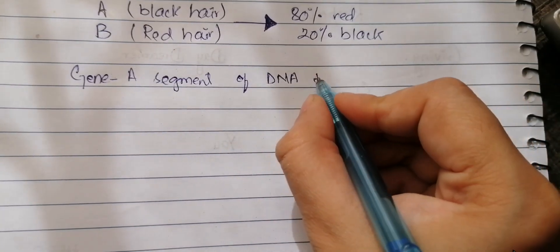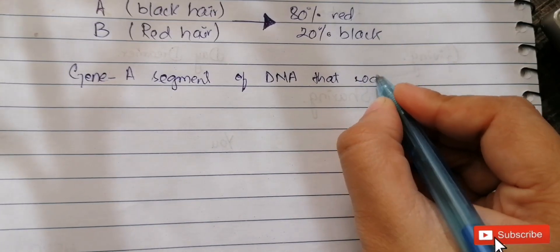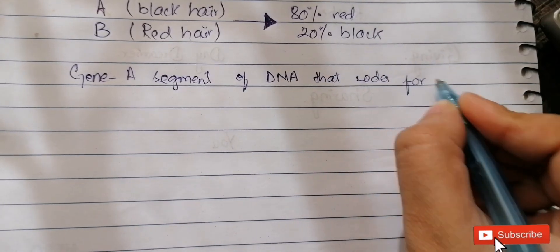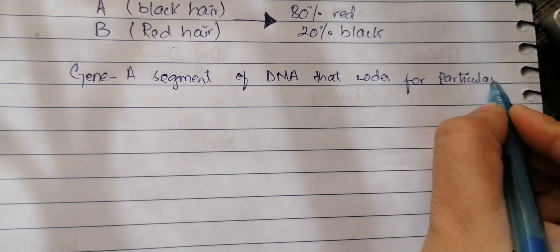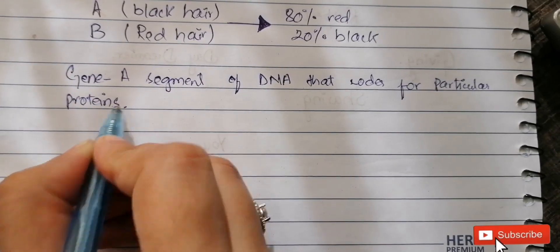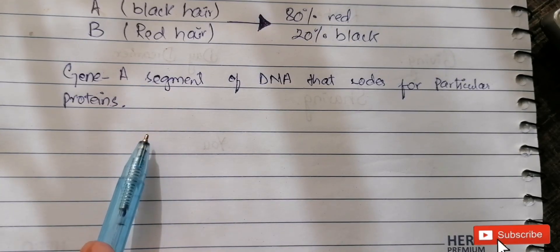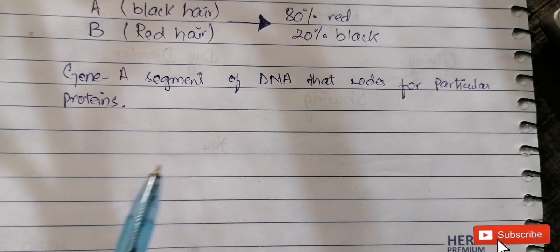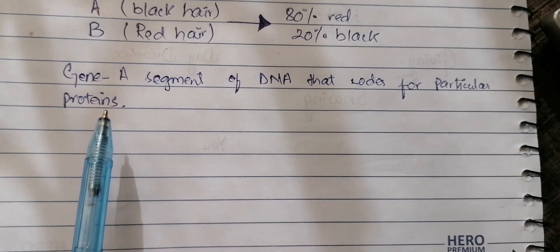What is a gene? A gene is a segment — a part or portion — of DNA. DNA is a long polymerized structure, a long chain, and a gene is only a specific segment of that DNA which codes for a particular protein. Coding means it delivers the message or encodes instructions for what proteins are going to be made and what functions they will perform. Proteins ultimately perform all the functions in the body.